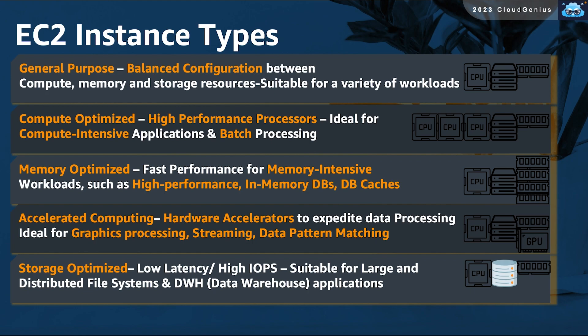The next type is the memory-optimized family. This type offers a high RAM-to-CPU ratio and fast performance for memory-intensive workloads, such as in-memory high-performance databases like SAP HANA and in-memory caches.